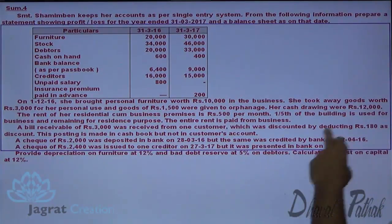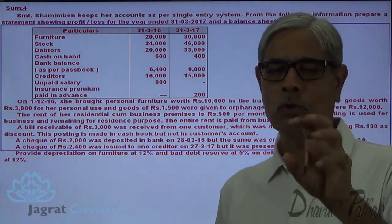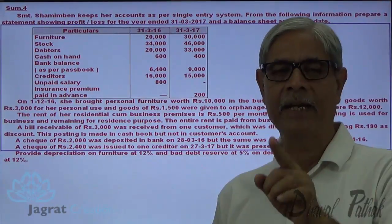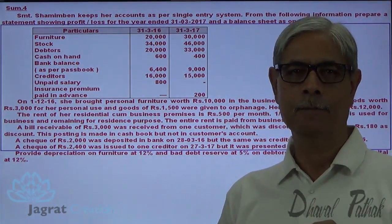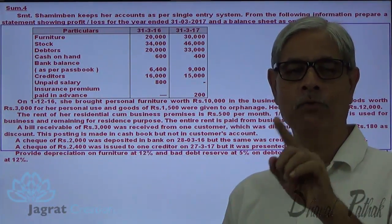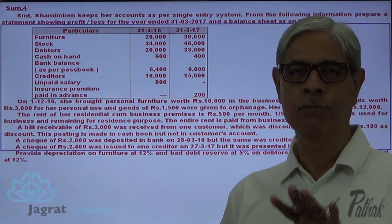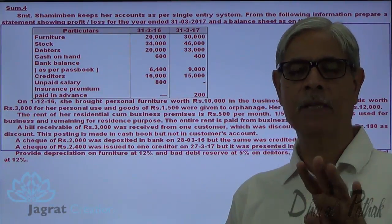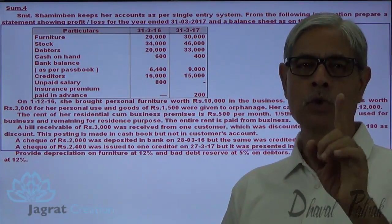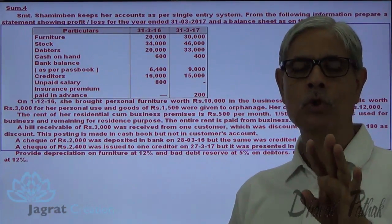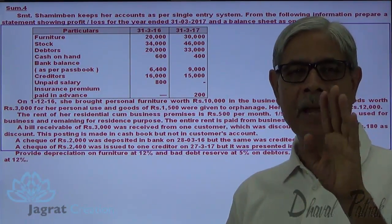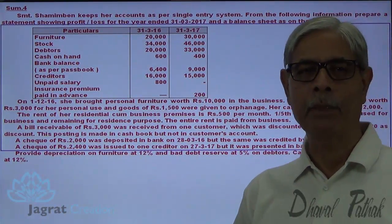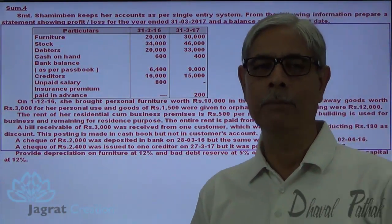Rent for her residential-cum-business premises is 500 per month. One-fifth of the building is used for the purpose of business, so one-fifth of 500 is 100, which is the business expense, and 400 is the personal expense. Personal expenses are paid out of business funds, so that is identified as drawings and will be considered while preparing the capital comparison statement.